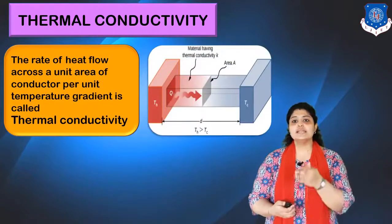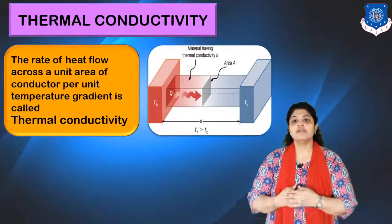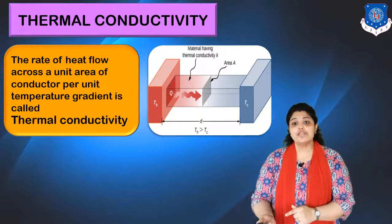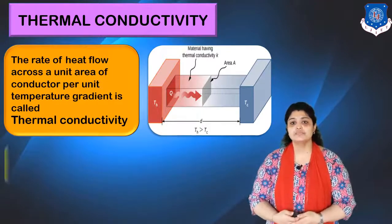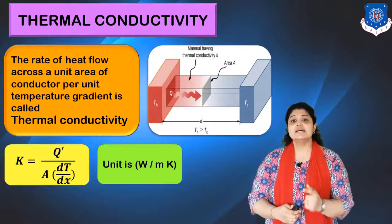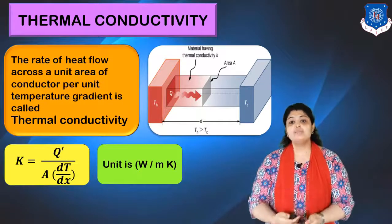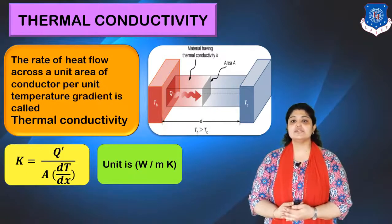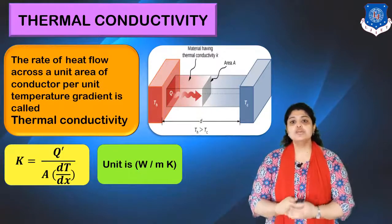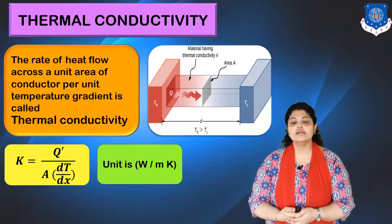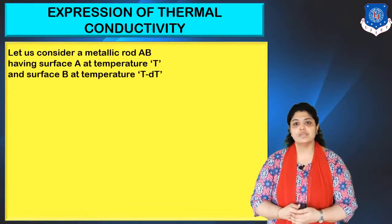Looking at the diagram, the red portion indicates higher temperature T2 and the blue portion indicates lower temperature T1. Heat flows from red to blue, i.e., from higher to lower temperature. Thermal conductivity is defined as K = Q' / (A × dT/dx), where dT/dx is the temperature gradient — the temperature drop across the distance travelled. The unit of thermal conductivity is Watt per meter·Kelvin. Let's now derive the expression of thermal conductivity.